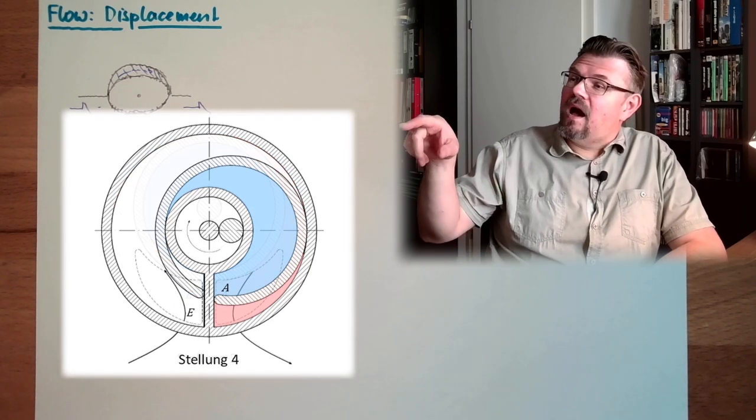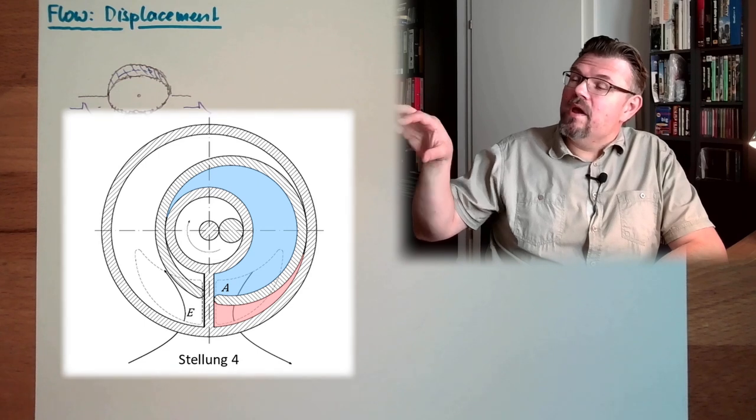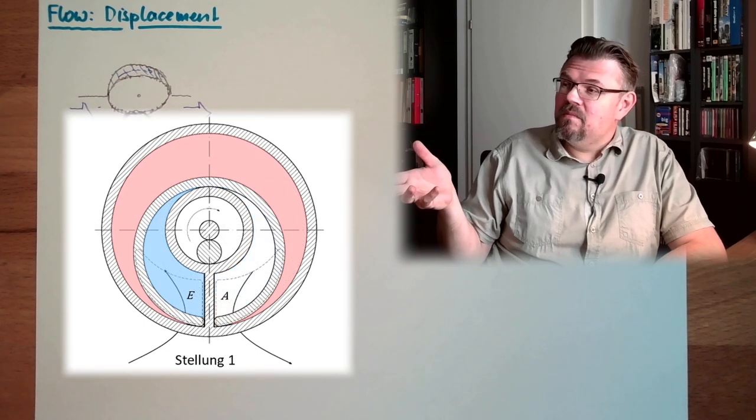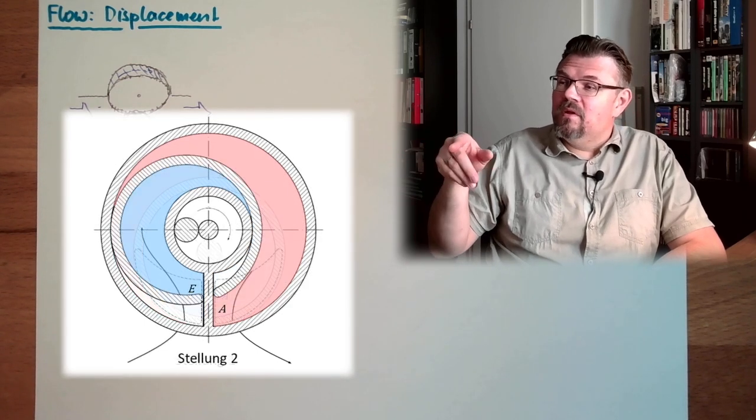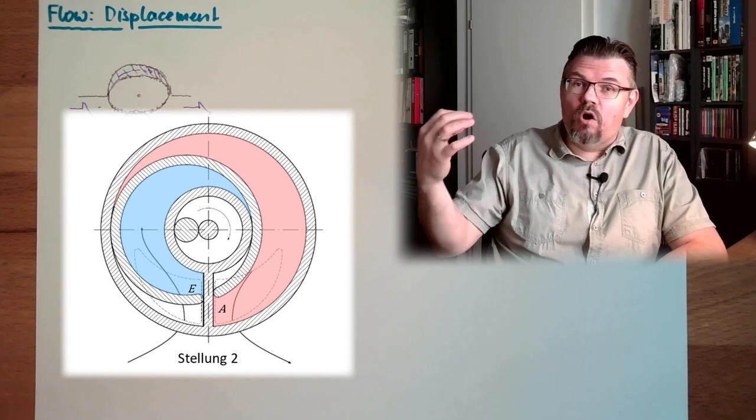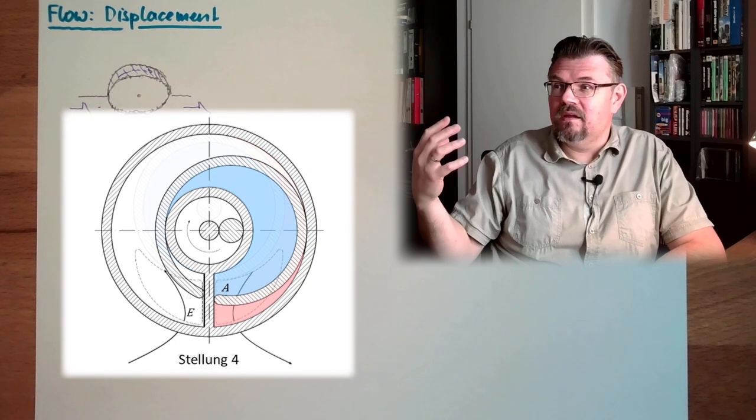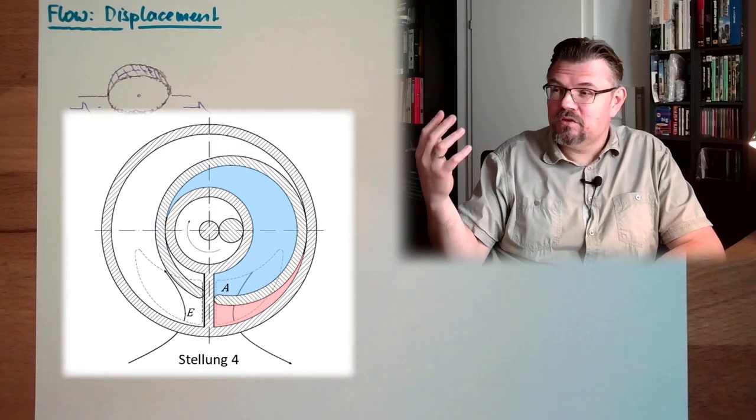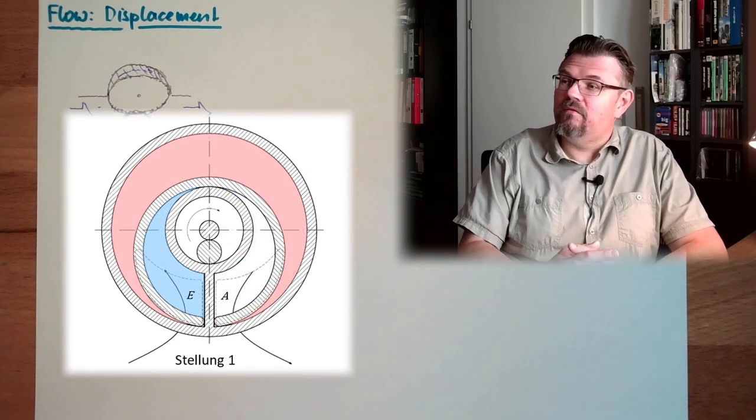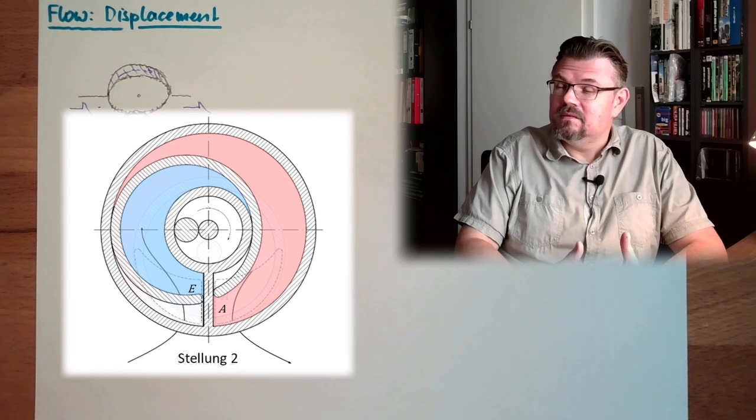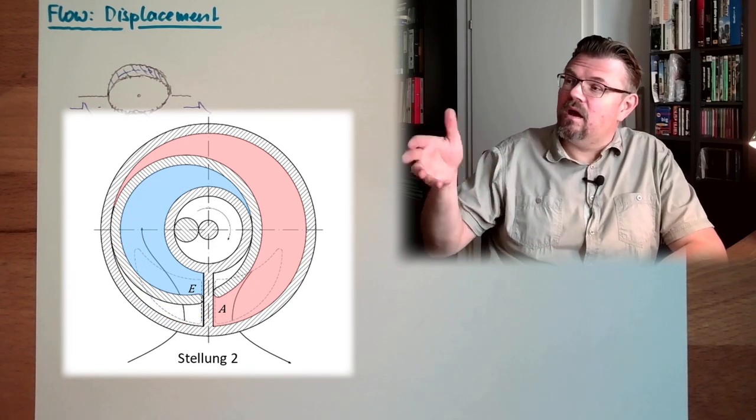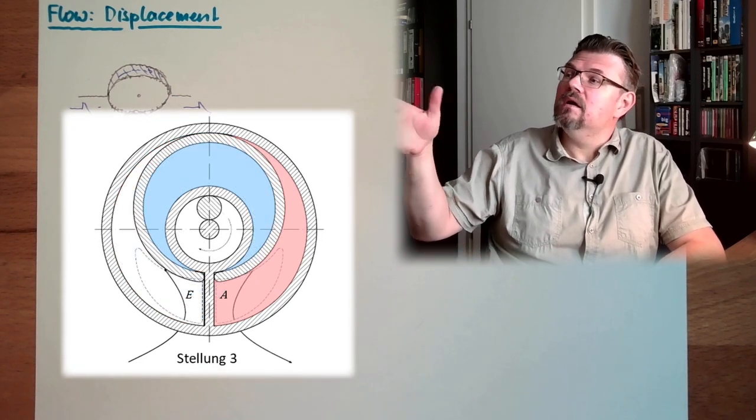You see how the red and blue areas are changing over time, and you see that from the one which there is a hole in the background, it's marked with E for entry, Eingang in German, and there is a mark of A, Ausgang, output, that's going out.